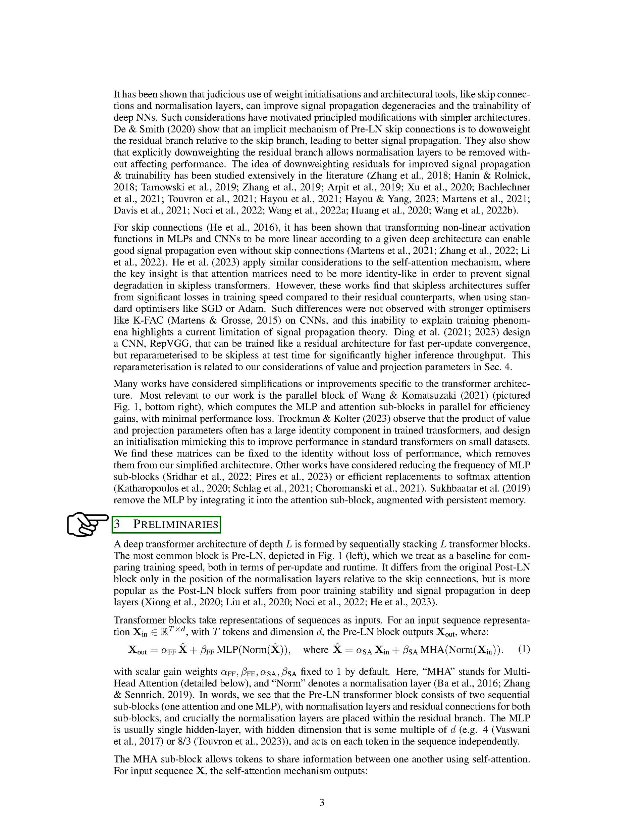We're going to discuss the basics of a deep transformer architecture. This type of architecture is made up of multiple layers, each containing a transformer block. The most common type of block is the pre-layer normalization, or pre-LN, block. We use this as a standard to compare the speed of training. The pre-LN block is preferred over the post-LN block because it offers better stability during training and better signal propagation in deeper layers.